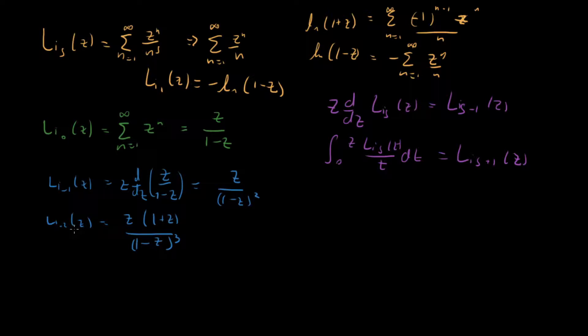So we know, for instance, that we have, let's try and get li sub 2 of z, for example. So we know 1. We know 1 is this guy right here. And so that means that li sub 2 is going to be integral 0 to z minus log, natural log, of 1 minus t over t dt.